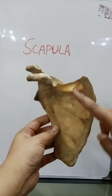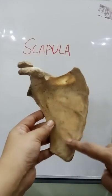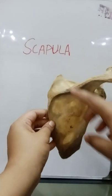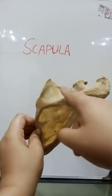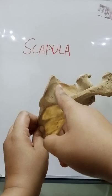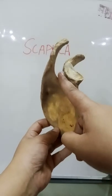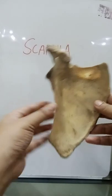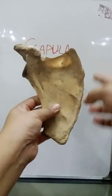The scapula bone has two surfaces. The costal surface has three longitudinal ridges. The dorsal surface is convex and has a triangular spine dividing it into supraspinous and infraspinous fossa, which are connected by the spinoglenoid notch. There are three borders, with the superior border having the suprascapular notch.